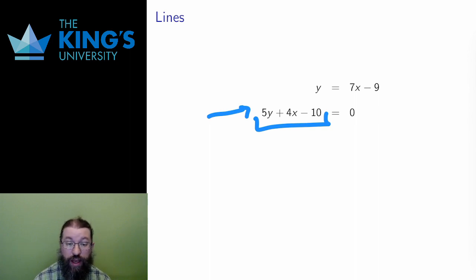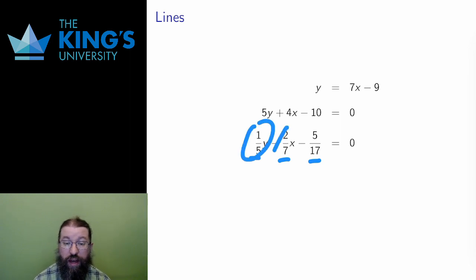Here's another. The line 1/5 y minus 2/7 x minus 5/17 equals 0. The constants don't need to be whole numbers. They can be fractions as well.